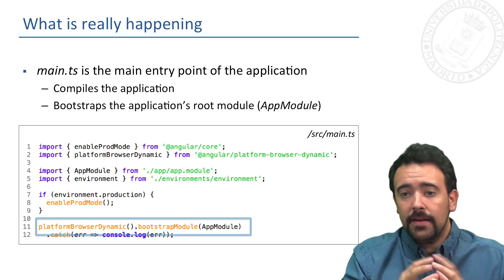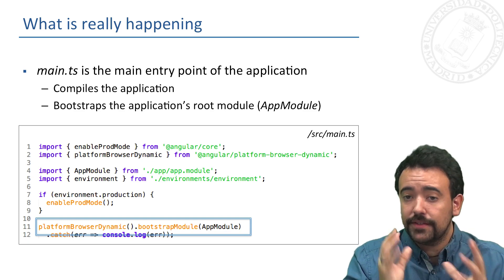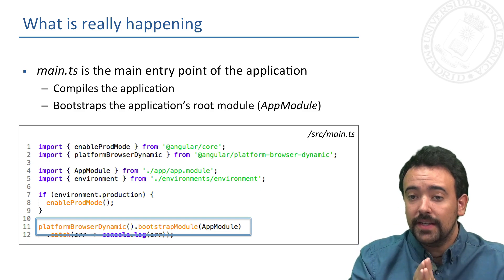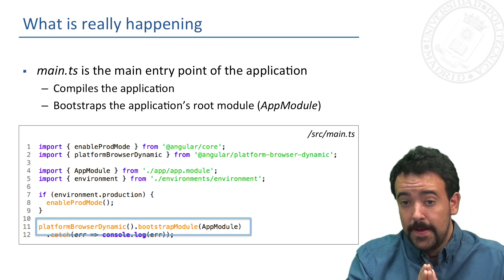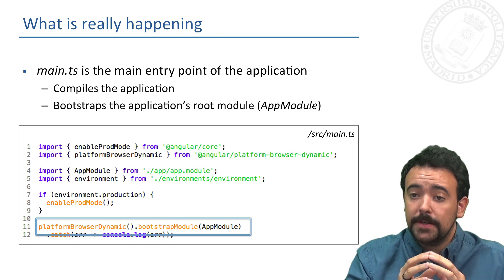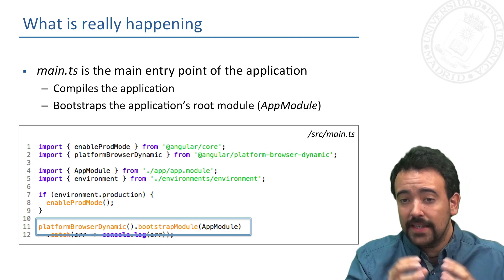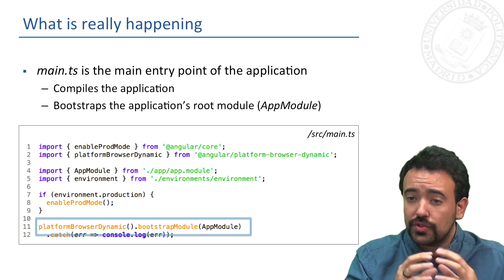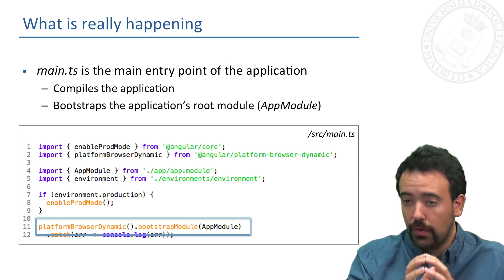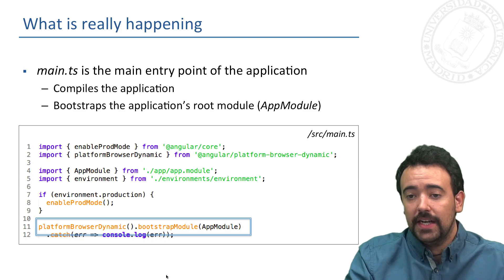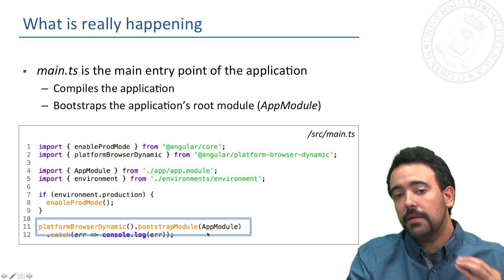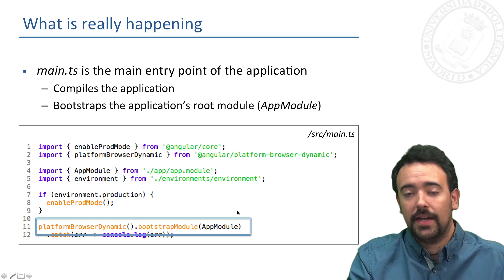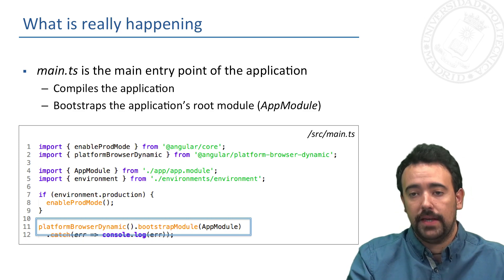The main entry point of the application is the main.ts file we can find in our folder structure. This file just compiles the application and bootstraps the application root module, the application module. We can see here in this line how we are telling Angular what is the main module that will act as the entry point in our application.